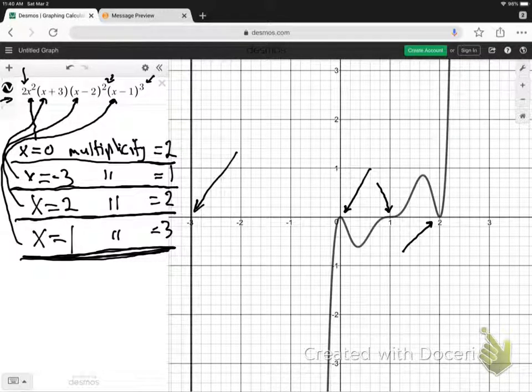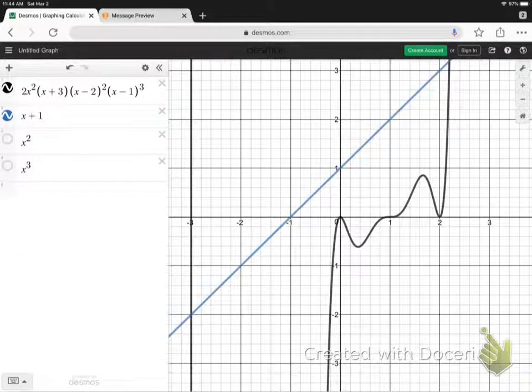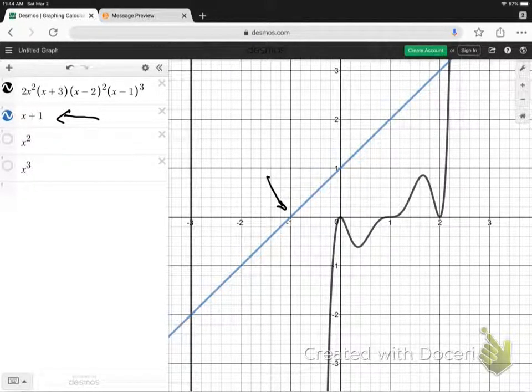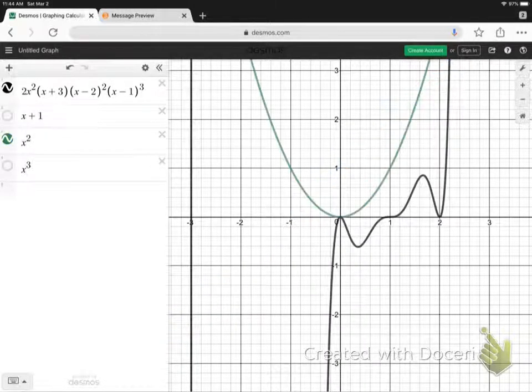Let's take a look at some other examples of this. So here we go, x plus 1, so that will have a zero of negative 1. There you go, it's crossing straight through at negative 1. Here's the x-squared graph. This has a zero of 0 but multiplicity 2 because it's squared, and that's why, can you see, it touches and turns at 0.